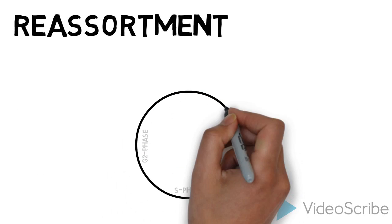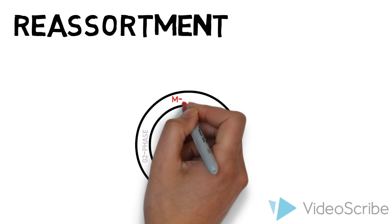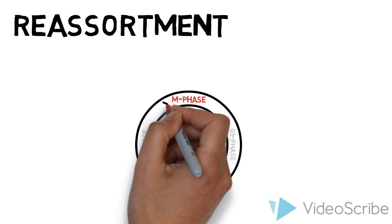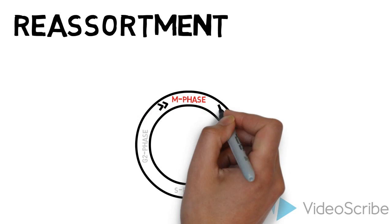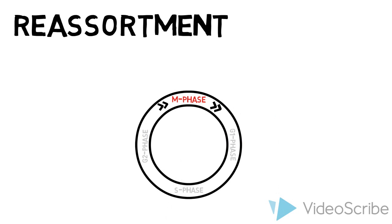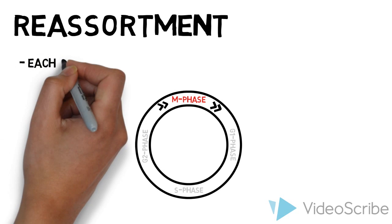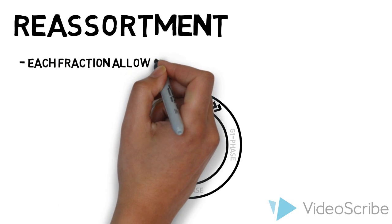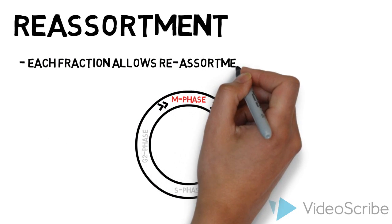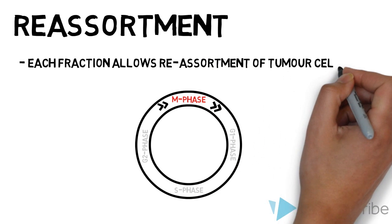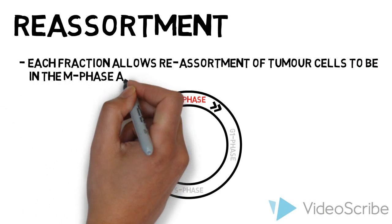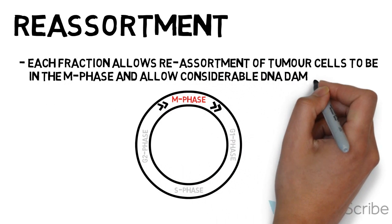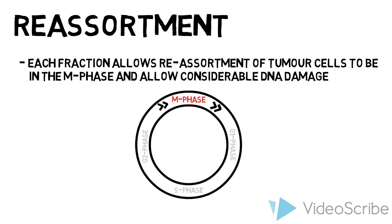Reassortment: tumor cells are at different phases in the cell cycle at any given time. Each fractionation allows reassortment of tumor cells to be in the M phase and allows radiation to produce considerable DNA damage.